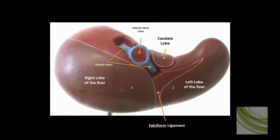From this side of the liver we can see the right lobe, the left lobe, and the caudate lobes. We can also see the hepatic veins emptying into the inferior vena cava. And here is the falciform ligament, which is the remnant of the umbilical vein.